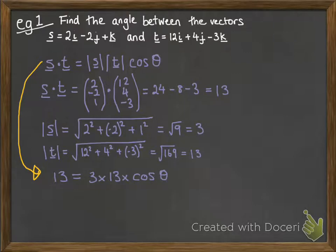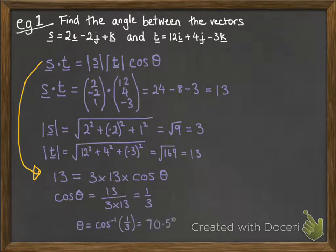So S dot T was 13. Modulus of S was 3 and modulus of T is 13. That'll be the same as times the 3 by the 13 and the cos theta. That will equal to 13 as our dot product. So cos theta will be 13 divided by 3 by 13. So that's a third. And then on your calculator, inverse cos of that gives us an angle of 70.5 degrees between those two vectors.